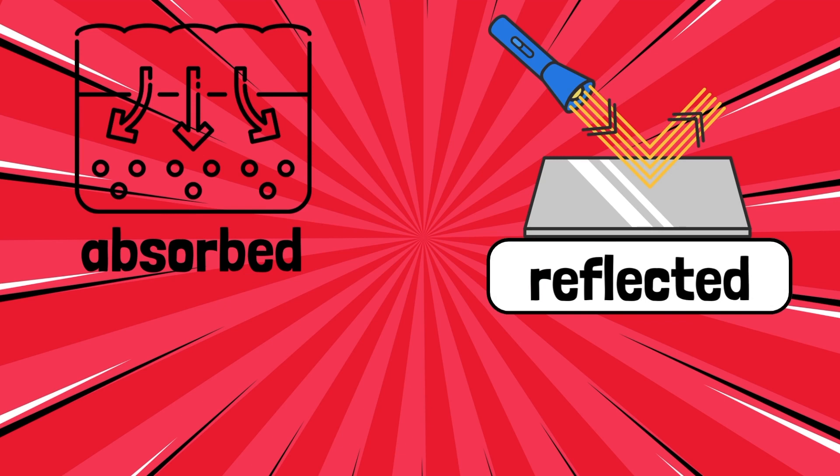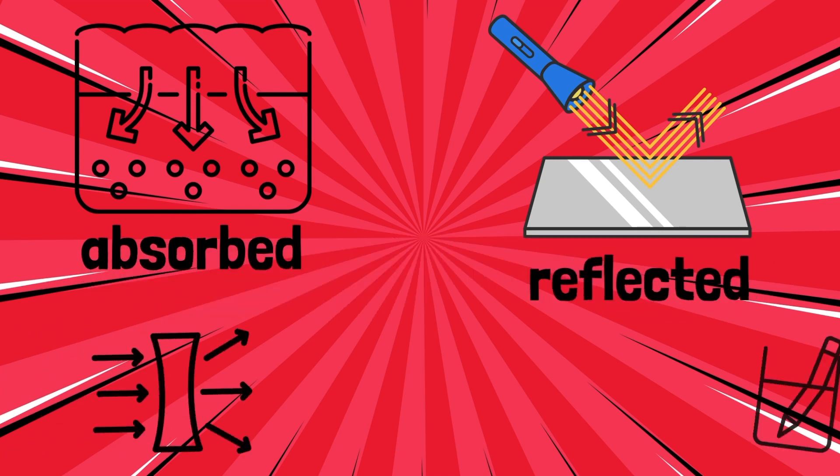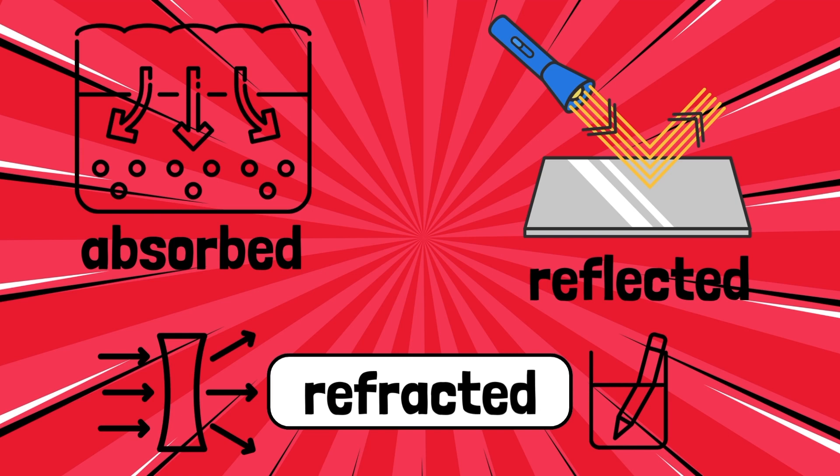And lastly, and maybe even more mysteriously, light waves can be refracted, which just means that they can change direction when they pass from one medium to another. They kind of bend and sometimes even make an object look bent or broken.